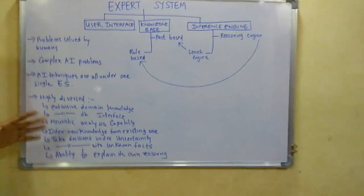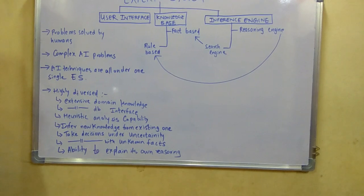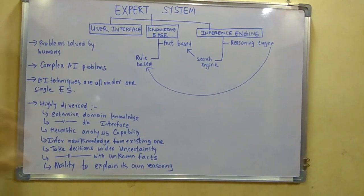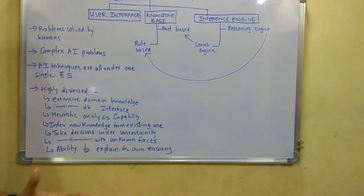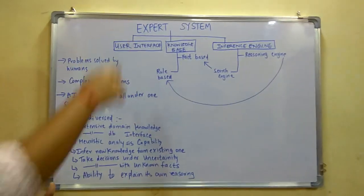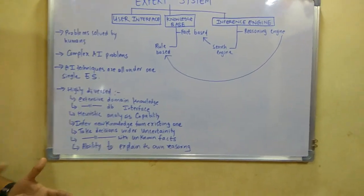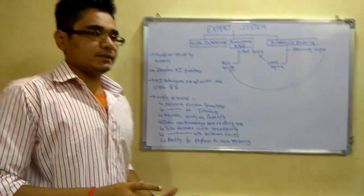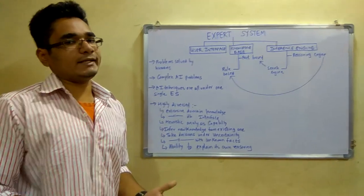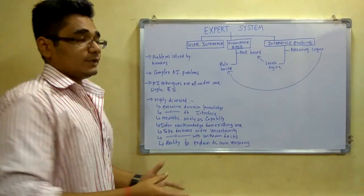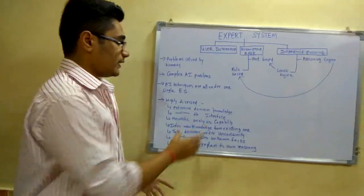Expert systems are highly diverse, meaning they have various kinds of domains like extensive domain knowledge. The AI system should have much knowledge about a particular topic. They also need wide extensive database interfaces where users would be interacting with the AI agent.